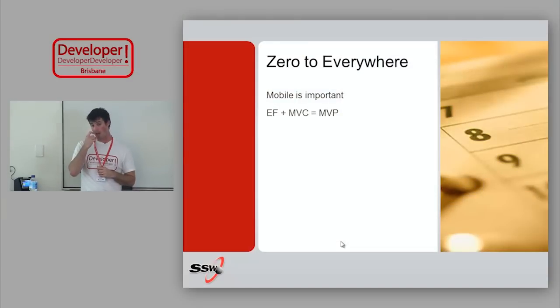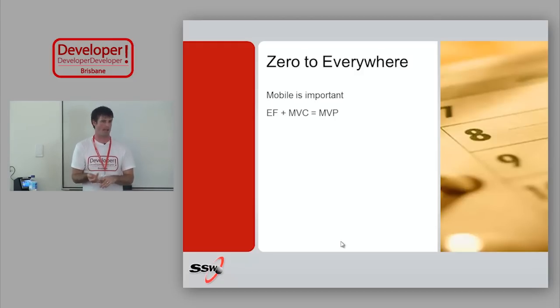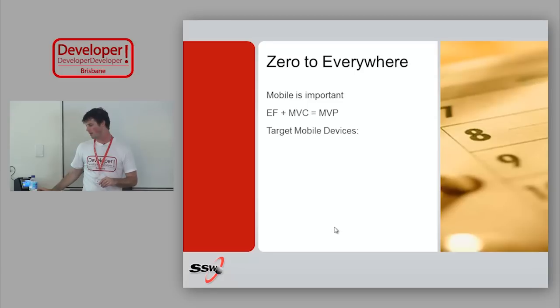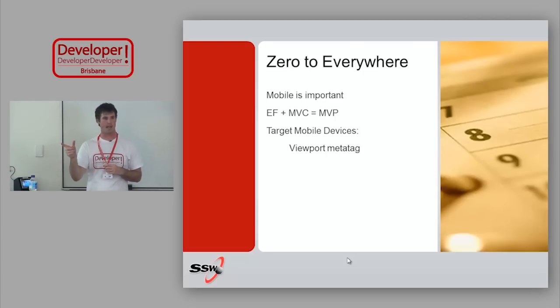Hopefully I've demonstrated that mobile is important and those statistics at the start hopefully convinced you of that. I've shown that Entity Framework plus MVC gives you a really quick way of building up an application from nothing — something you can use that has authentication, authorization, objects, and a whole database structure. And finally, I hope I've shown some different ways of targeting mobile devices. I would honestly recommend doing these in order — number one: go put this viewport meta tag in tomorrow, have a look at your site on a mobile phone and see if it looks better.